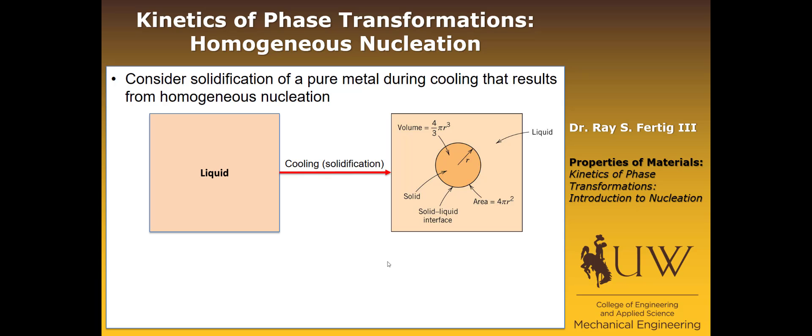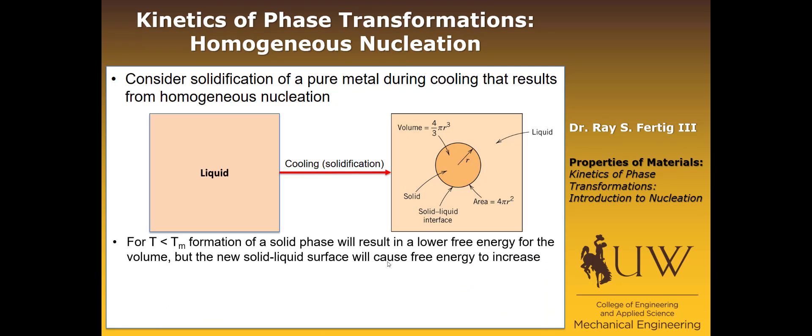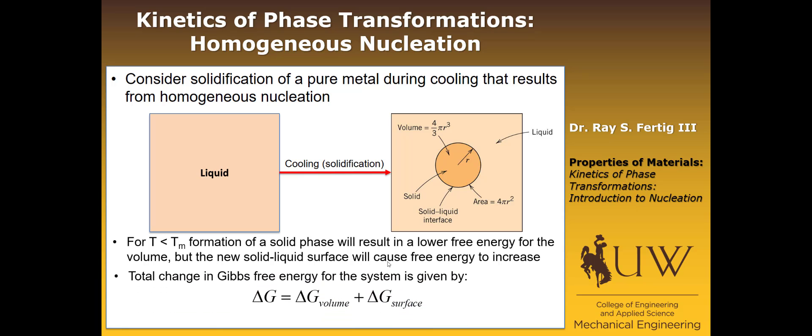Now we're going to get a little more technical. We're going to talk about the homogeneous nucleation of a pure metal — a solidification process during cooling that results in some particle. For some temperature less than the melting temperature, the formation of a solid phase within the liquid is going to lower the free energy, at least within the volume where the transformation occurred, because if it's below the melting temperature, then the equilibrium state is to have the solid phase. But whenever we form that solid, there's going to be a new liquid-solid interface that's going to cause the free energy to increase. So we can write the total change in the Gibbs free energy as the sum of the reduction in the Gibbs free energy of the volume plus the increase from the Gibbs free energy of the surface.